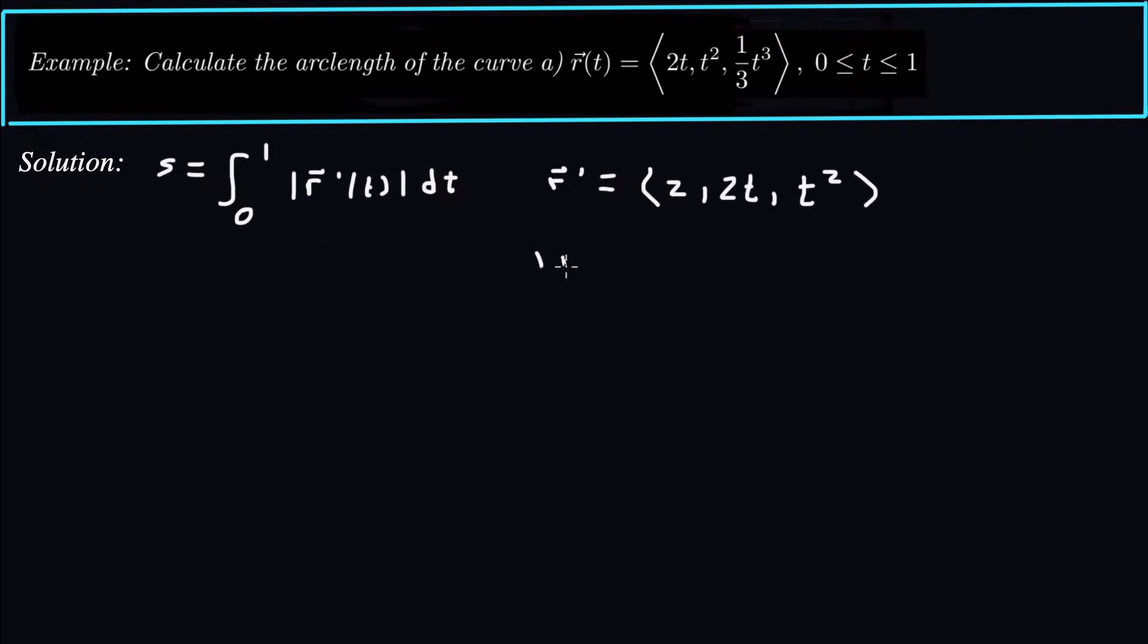Now magnitude of that is going to be square root 4 plus 4t squared plus t to the 4. So that's just taking the magnitude of a vector right there. Now here's the trick. So I have to integrate magnitude of R prime which is basically this square root function. But that's not very friendly as far as integrating goes. So hopefully I can reduce this somehow under the radical so that it's easier to integrate. And it does turn out to be a perfect square.